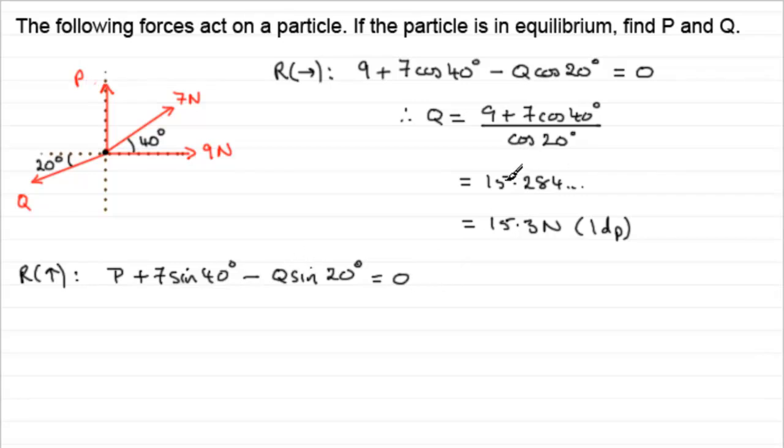Now we already know Q if we use this unrounded value here, substitute it into here, we can get P. So by rearranging this equation, we have that P equals Q sine 20 minus the 7 sine 40. So in place of Q then I'll just write 15.284 and so on. And that's being multiplied by the sine of 20 degrees. And then we've got minus 7 sine 40. And if you work that out in your calculator, you'll end up with 0.7279 and so on. So that means that P, if we give it to one decimal place, it's going to be 0.7 newtons then to 1 dp.